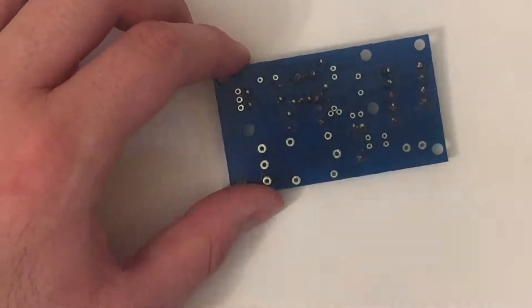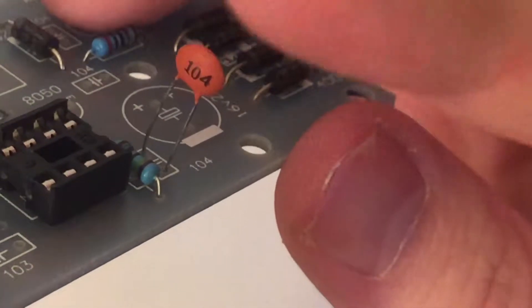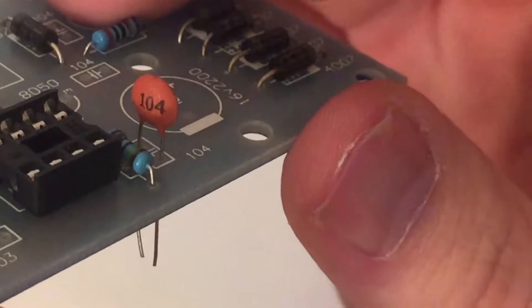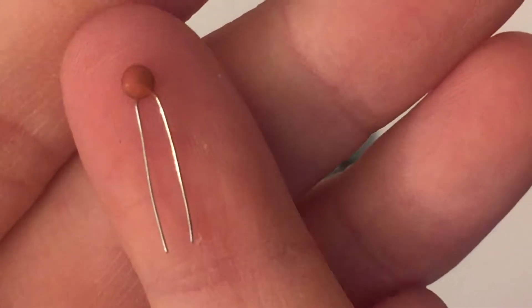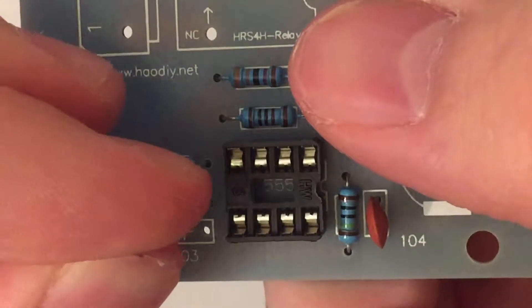When this was done I added the small capacitors. These can go in either way around. Just stick it in and solder it in place. Repeat this process for all the other ones and don't forget to add the smaller one as well.